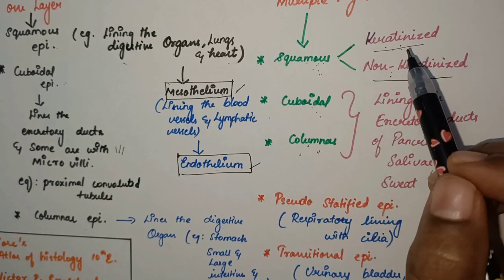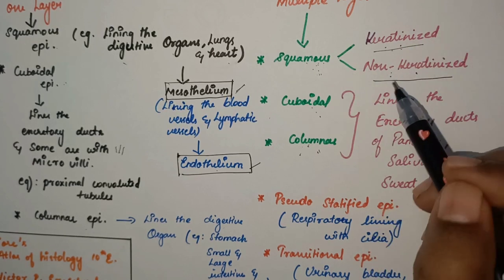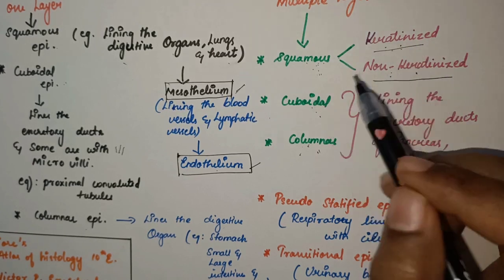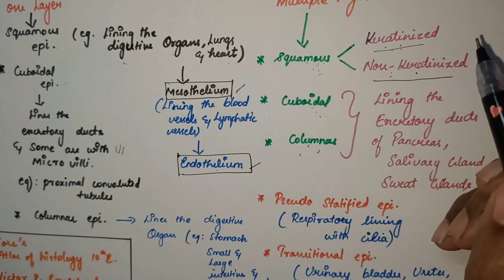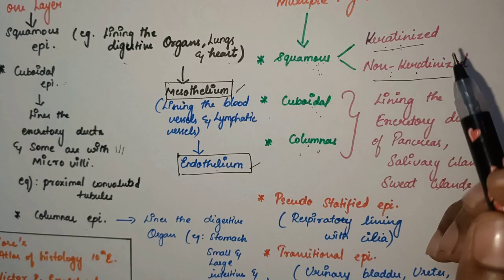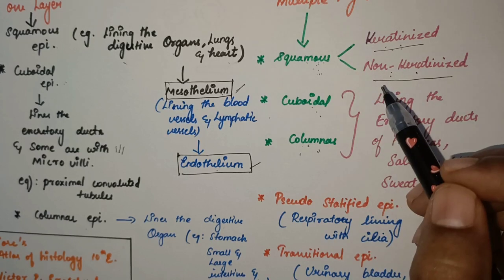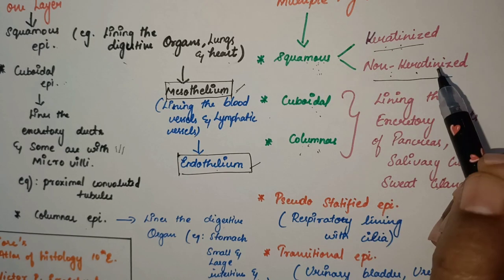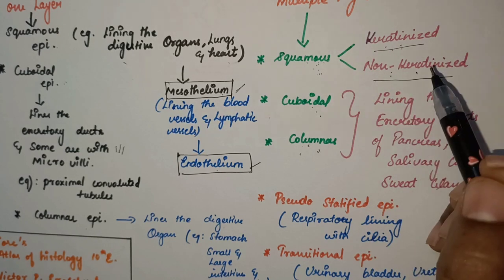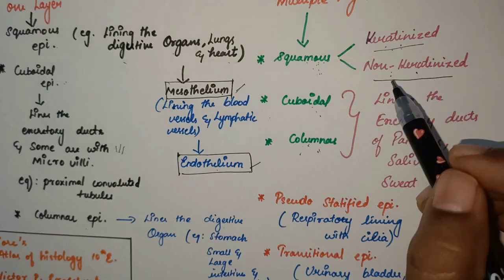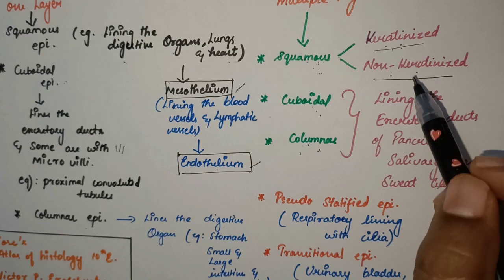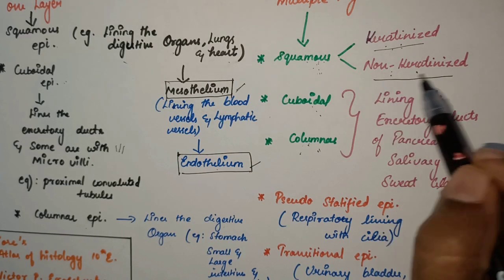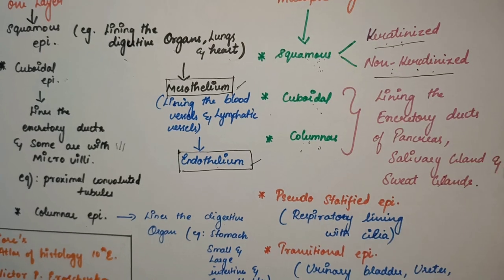Non-keratinized epithelium covers all other structures in the oral cavity apart from the hard palate and gingiva — including the buccal mucosa and most of the tongue. The tongue has a specialized mucosa, but most commonly non-keratinized refers to the general oral mucosa.